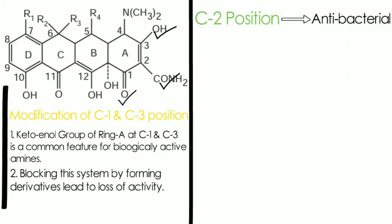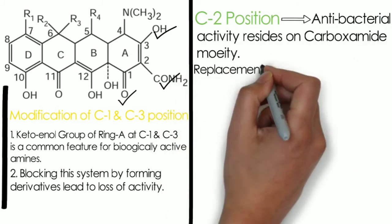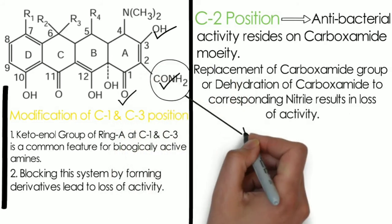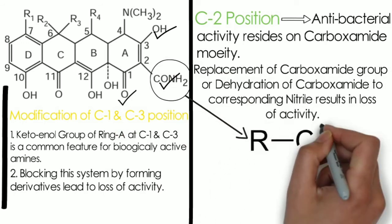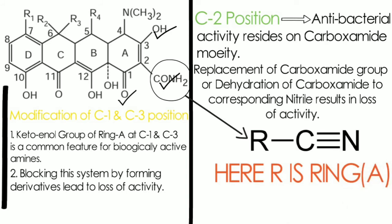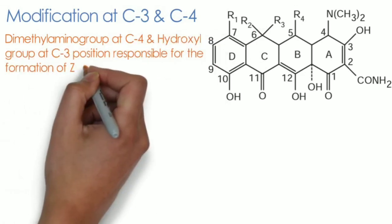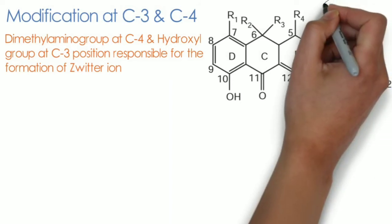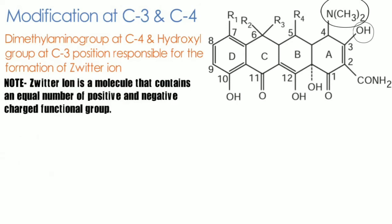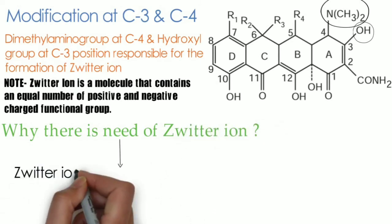If we do some changes at position 2, antibacterial activity will diminish, as antibacterial activity resides on the carboxamide moiety. Replacement of the carboxamide moiety or its dehydration to the corresponding nitrile results in loss of activity. In the diagram, replacing position 2 with an RCN group — where R is ring A — leads to loss of activity. The dimethylamino group at carbon 4 and the hydroxyl group at carbon 3 are responsible for the formation of a zwitterion, which is a molecule containing equal numbers of positive and negatively charged functional groups. This zwitterion is responsible for the distribution of the drug in the body.